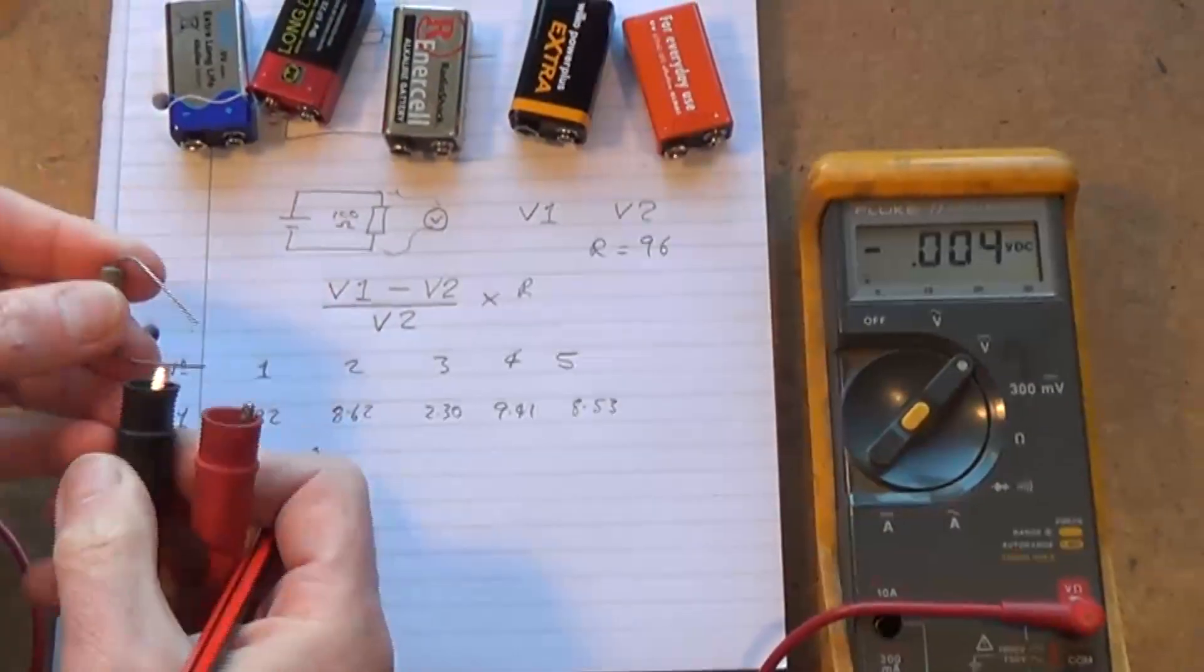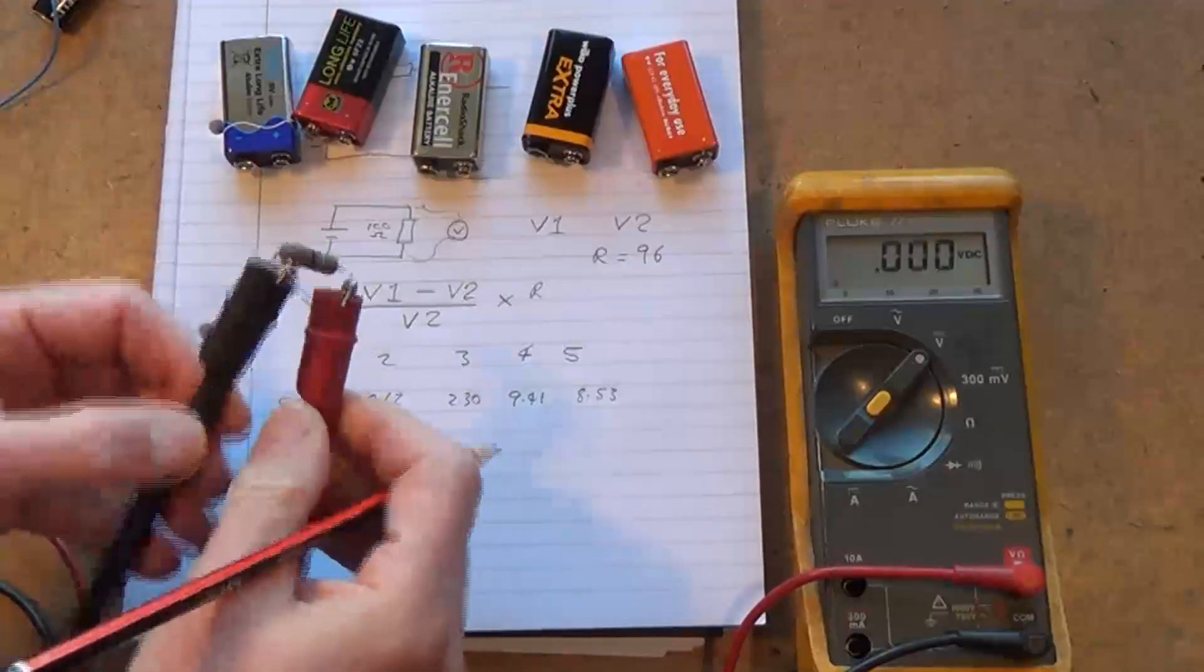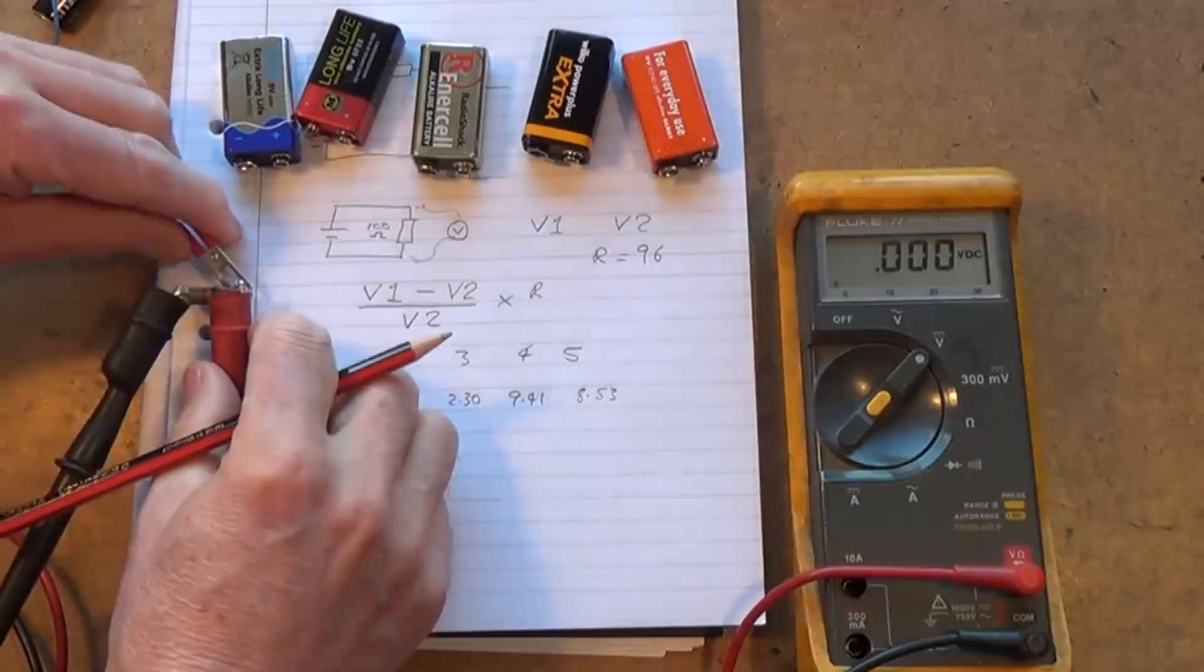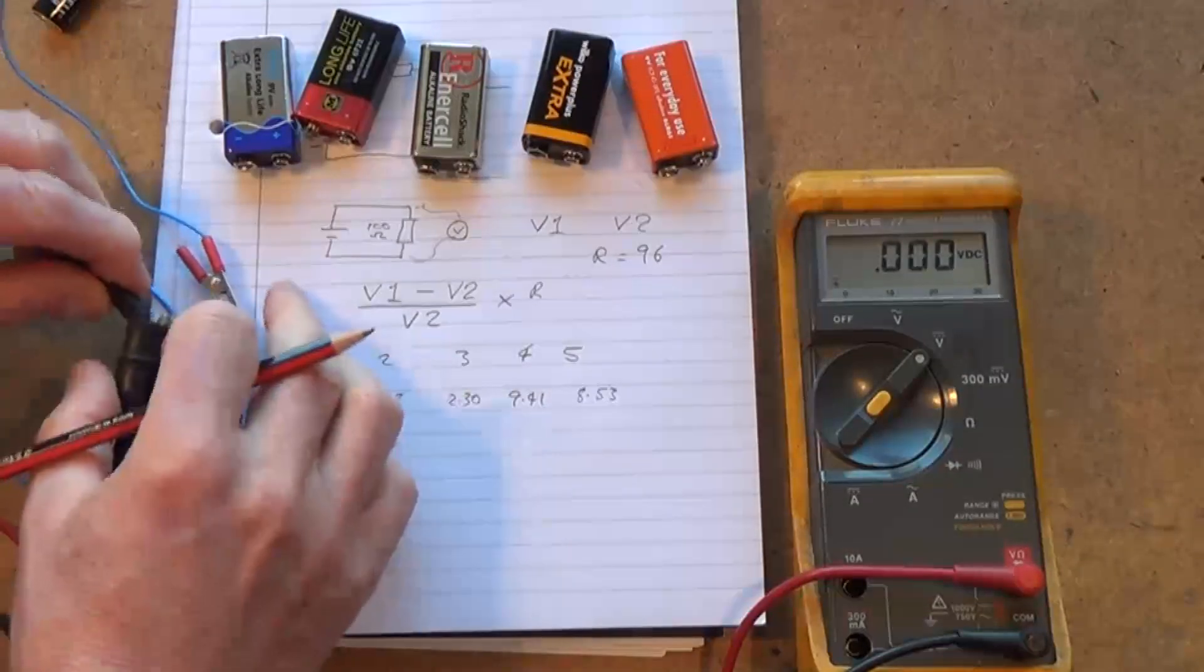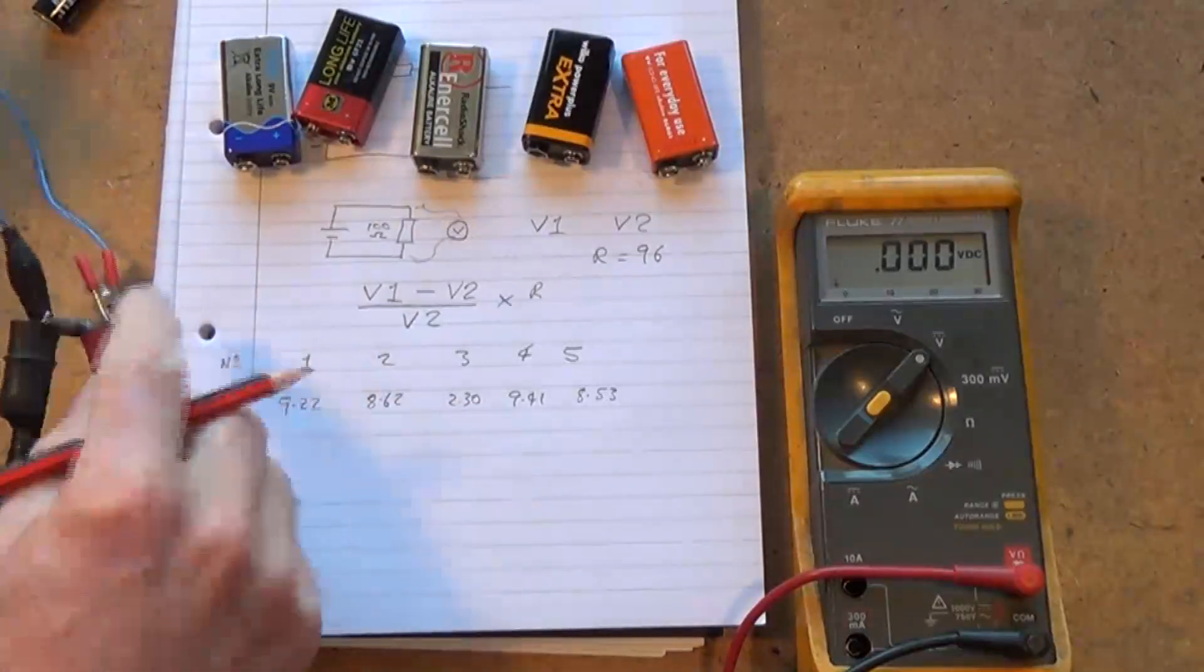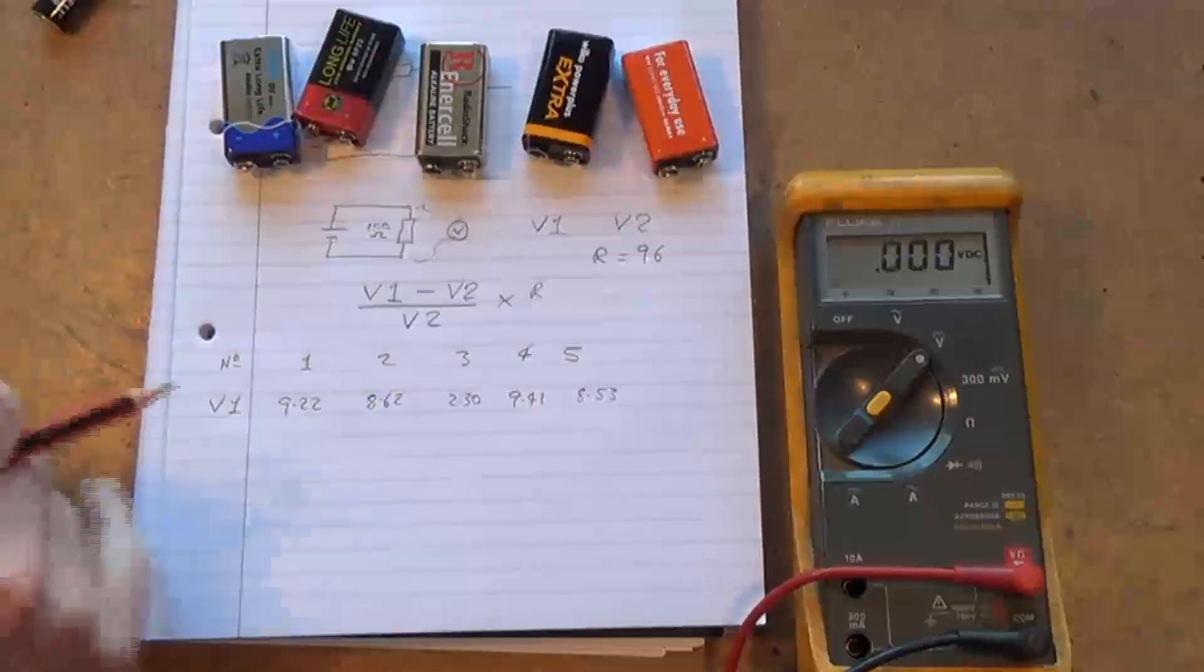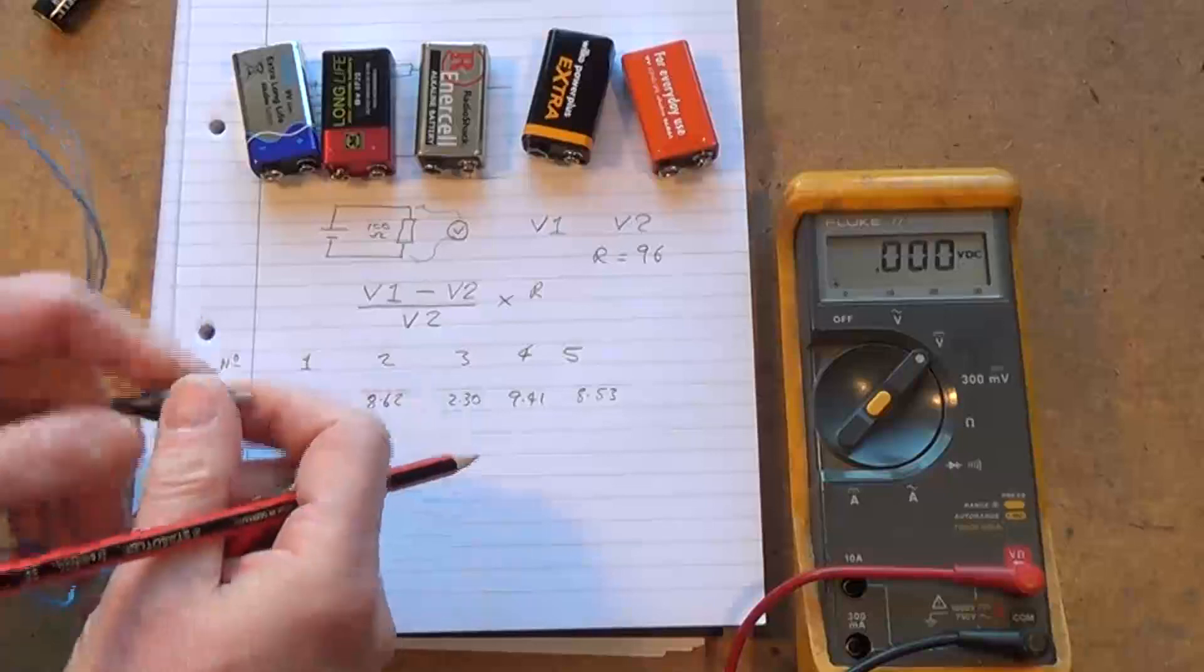Okay, now what I'm going to do is connect this 96 ohm resistor across there. There isn't going to be enough resistance in these ones to create any problems. Okay, so now we go through and we take the V2 readings.